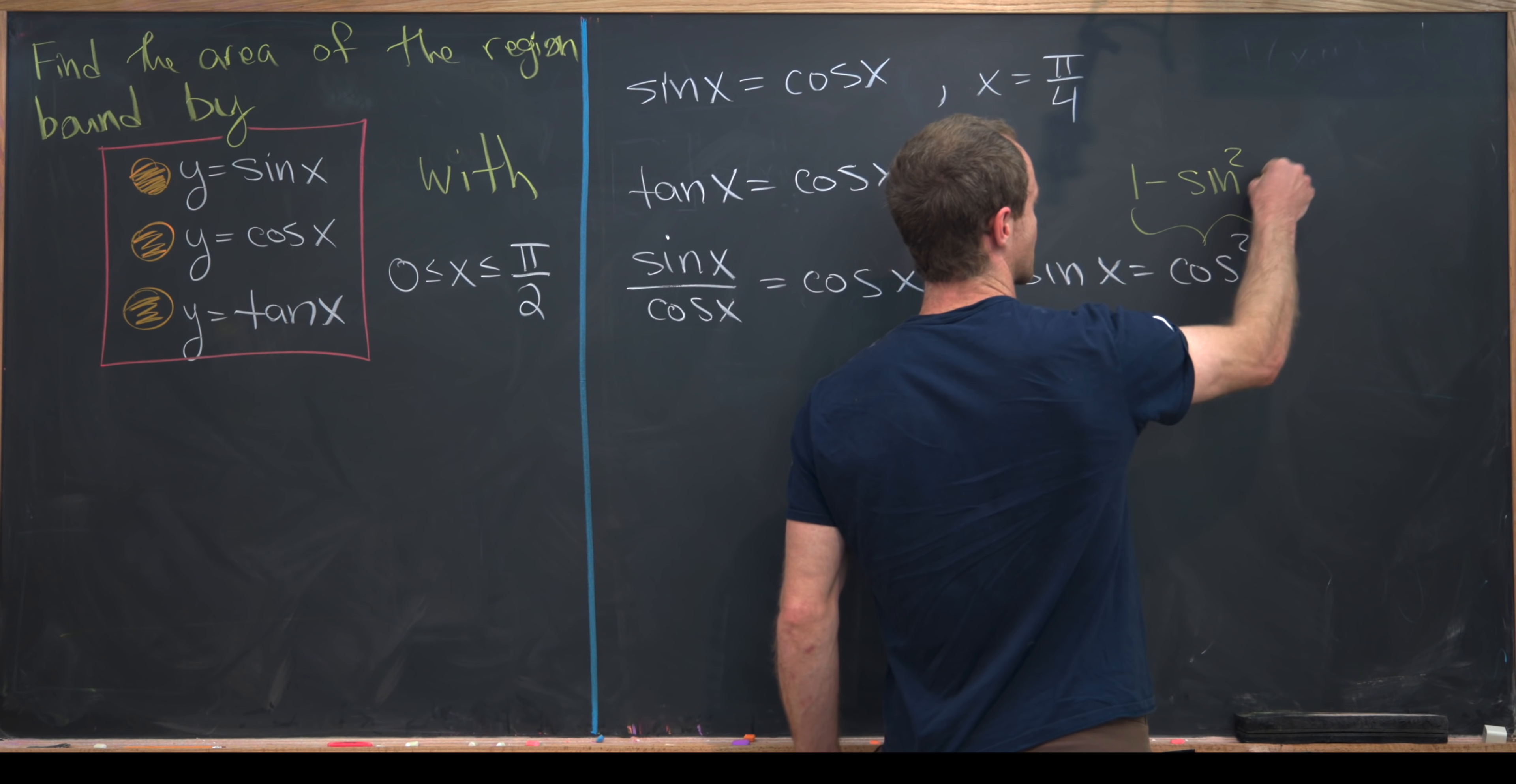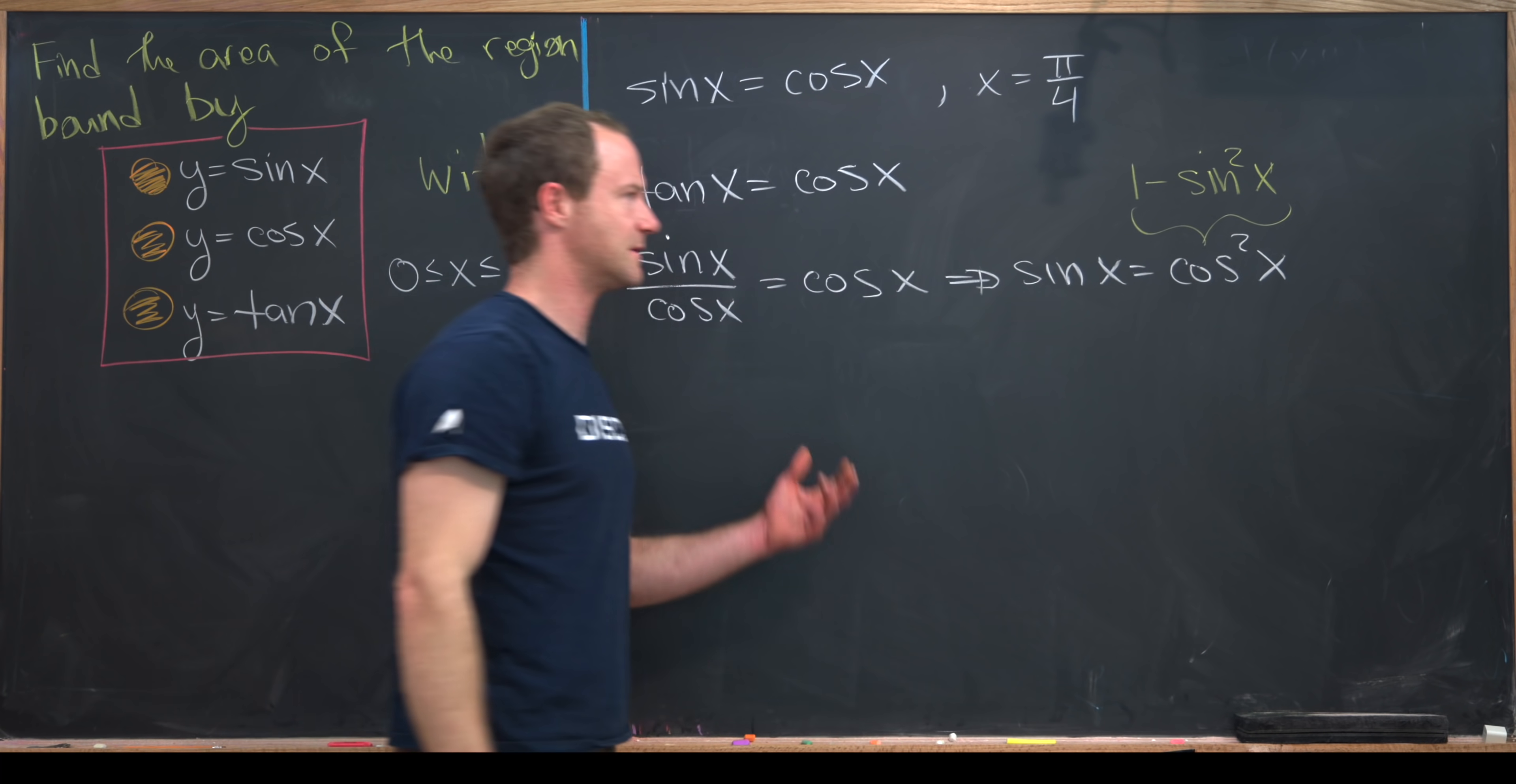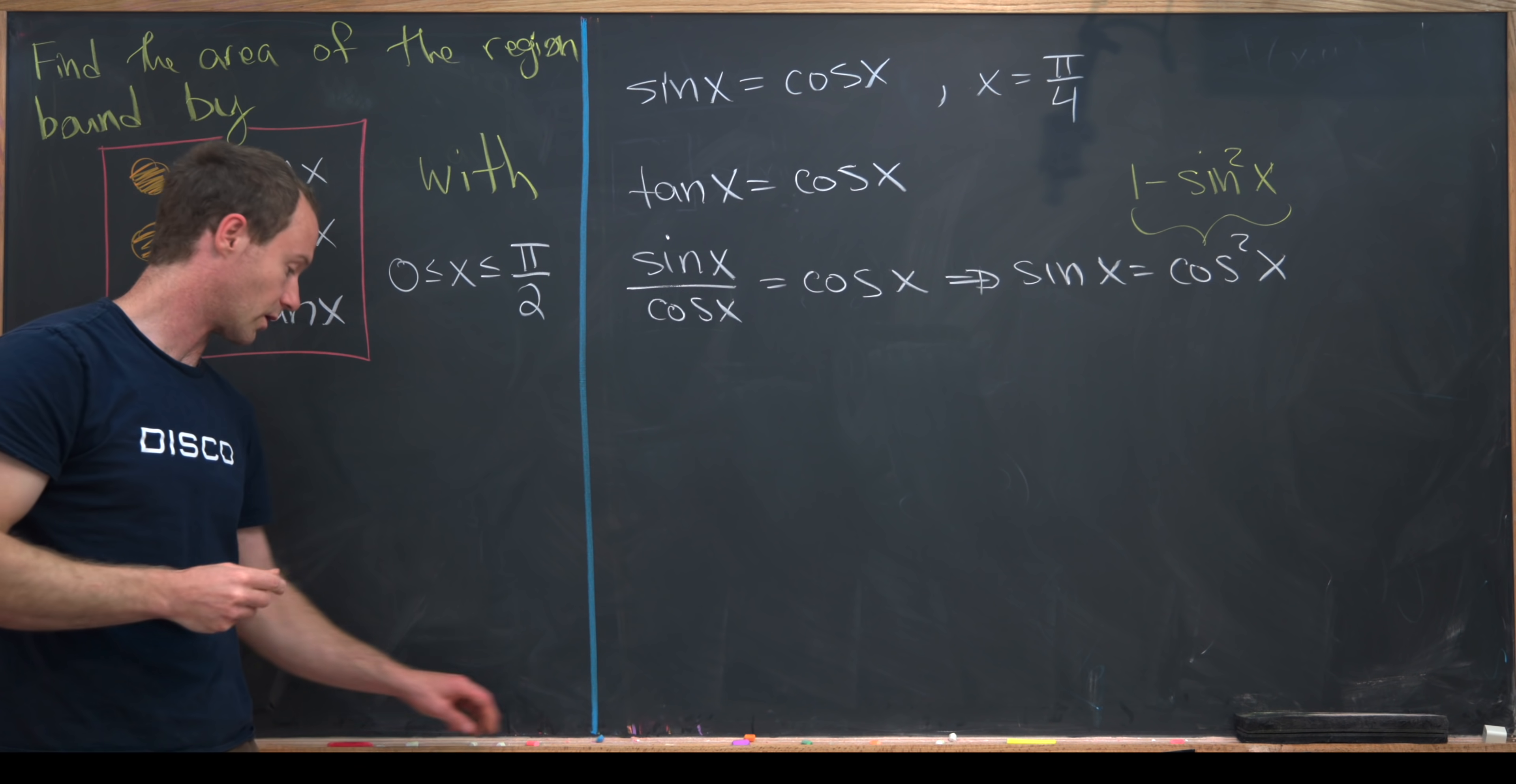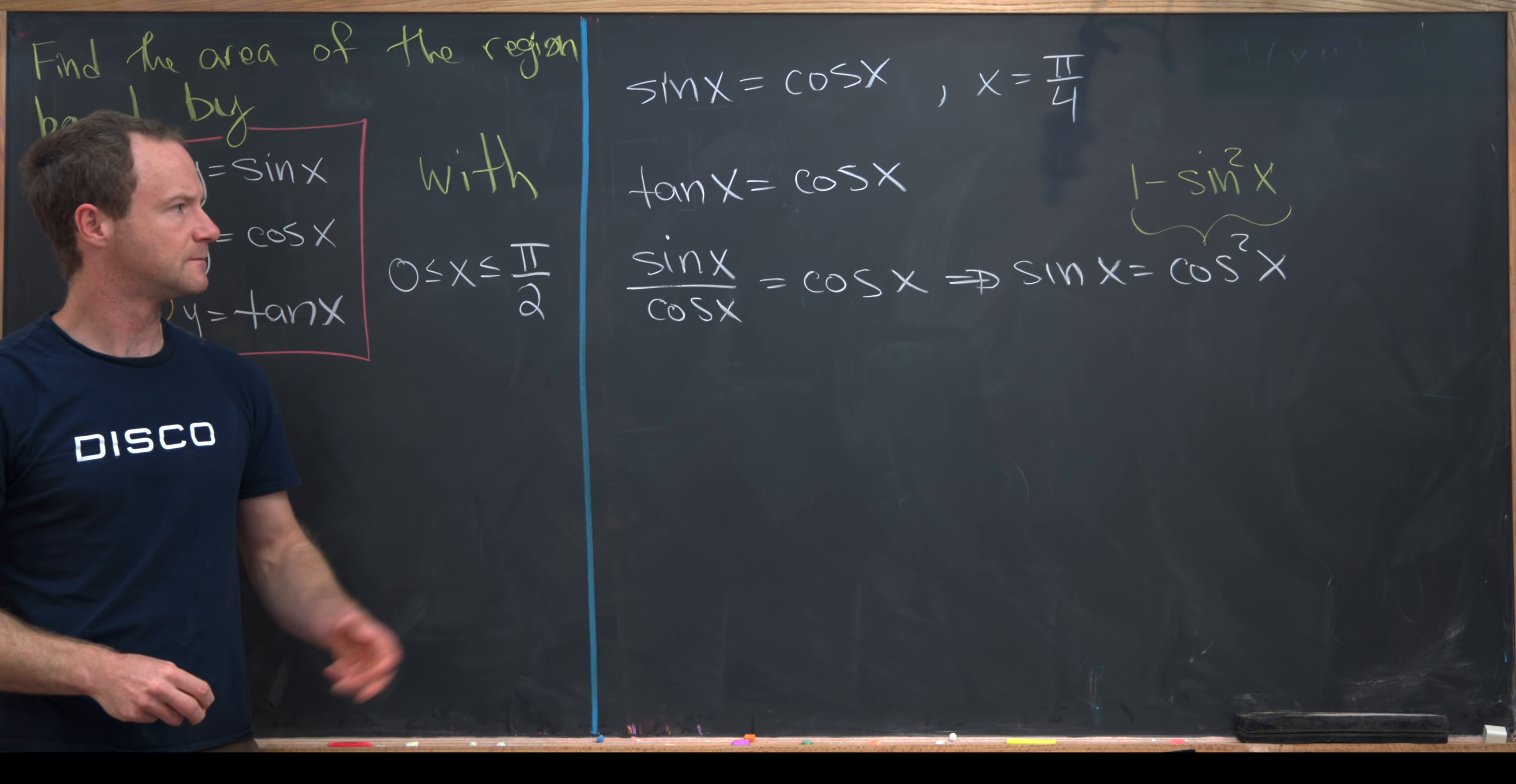That would actually be pretty hard to solve unless we remember that cosine squared can be rewritten as 1 minus sine squared. That's just by the Pythagorean identity for the trig functions.